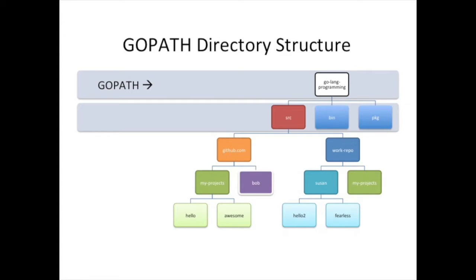You might also have a work repository different from GitHub, where a colleague Susan has some projects, and you might keep work projects separate from personal ones. Once you compile those projects and have executables, you need to put them somewhere — that's where the bin binary directory comes in.